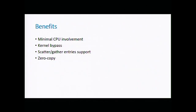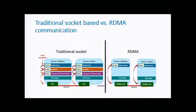The benefits of RDMA include minimal CPU involvement, since packet processing is offloaded to hardware. Kernel bypass allows user applications to fully bypass the kernel and use memory regions directly. RDMA was designed with scatter-gather entry support, allowing non-contiguous memory to be used in pieces. Zero copy means that unlike traditional sockets — where the application buffer is copied along the networking stack — in RDMA the buffer is used directly by the RDMA NIC and transferred to the remote host.